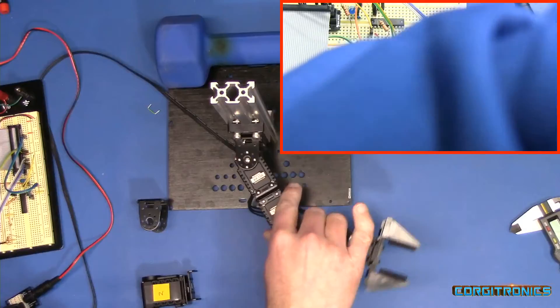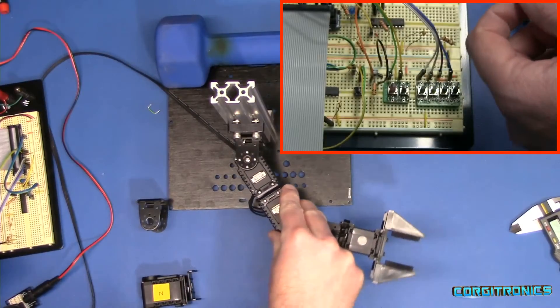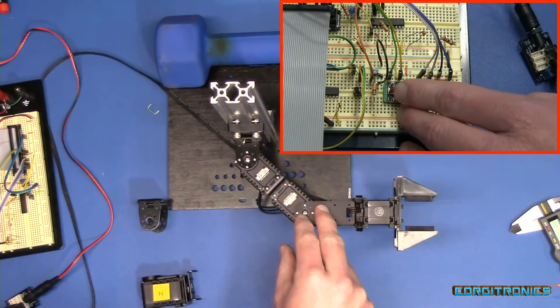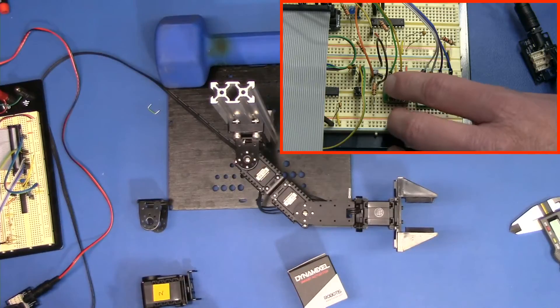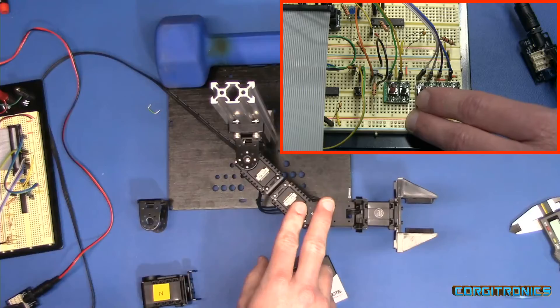So if we want to teach the robot a position, I'm going to use this position right here. And I've pressed button one to learn it. So I press the Learn button and position the arm, then press button one to learn it.